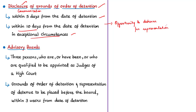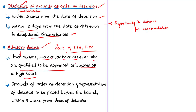If the authority feels it must disclose facts against public interest, it may withhold such information from the detainee. Section 9 of this act states that the central government and each state government shall, whenever necessary, constitute one or more advisory boards consisting of three persons — present judges of high courts, former judges, or those qualified to be appointed as judges of high courts. The appropriate government shall place the grounds of the detention order and the detainee's representation before this advisory board within three weeks from the date of detention.